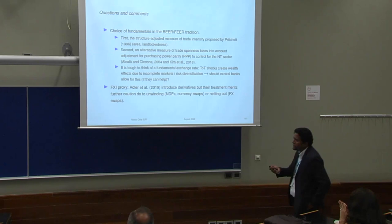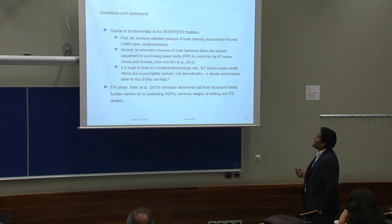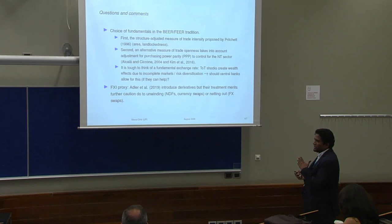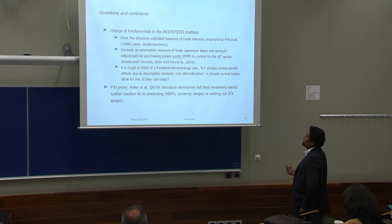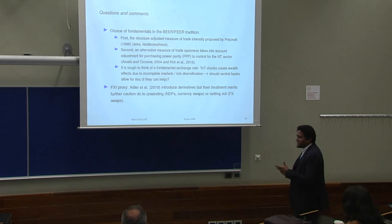One point I want to address is that the paper uses fundamentals in the BEER or FEER tradition that the IMF is familiar with. For trade openness measurement, there are interesting proposed alternatives like one by Pritchett that corrects for country area and landlockedness. There's also an alternative that controls for purchasing power parity to account for non-tradables in the economy. These could be improvements or robustness tests for the measurements of trade openness.